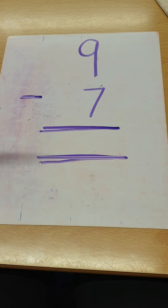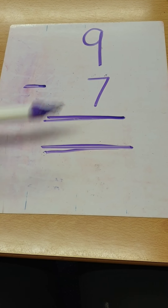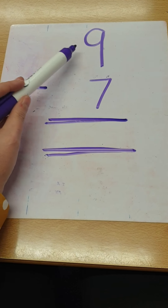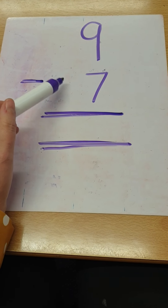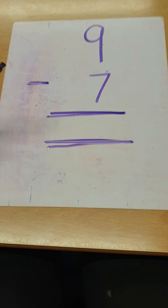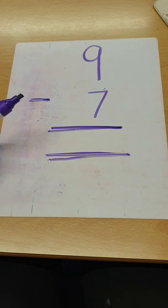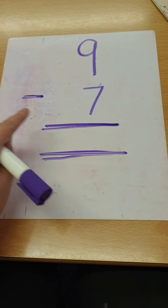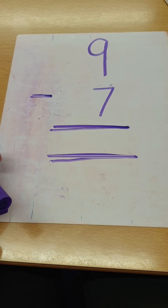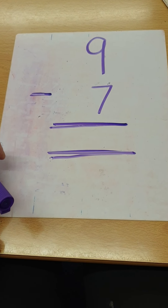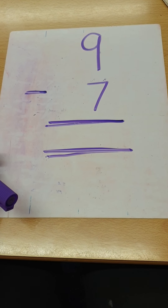Let's have a look at the sum. I've got nine take away seven. Now I have nine ones and zero tens, and I have seven ones and zero tens, because they're both one-digit numbers. When we have a one-digit number we only have ones. So when we subtract we always start with the biggest number. It is nine, and that is why nine is the top number in our column subtraction sum.